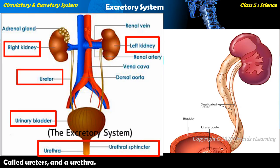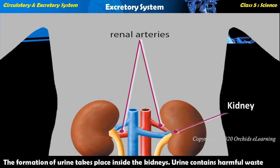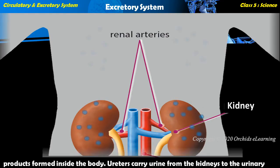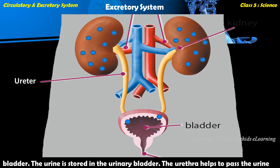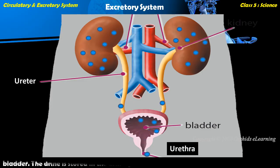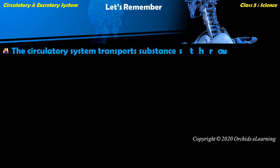The formation of urine takes place inside the kidneys. Urine contains harmful waste products formed inside the body. Ureters carry urine from the kidneys to the urinary bladder, where the urine is stored. The urethra helps to pass the urine out of the body.